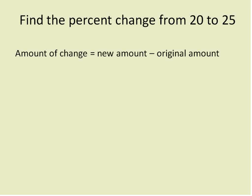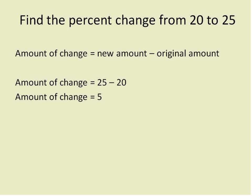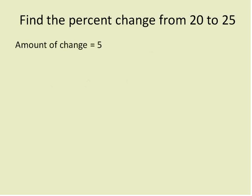So find the percent change from 20 to 25. First we need to calculate the amount of change. We do that by taking the new amount minus the original amount. In this case that's 25 minus 20, which equals 5. So the amount of change is 5 — that's how much it actually changed. It changed from 20 to 25, it changed by 5.